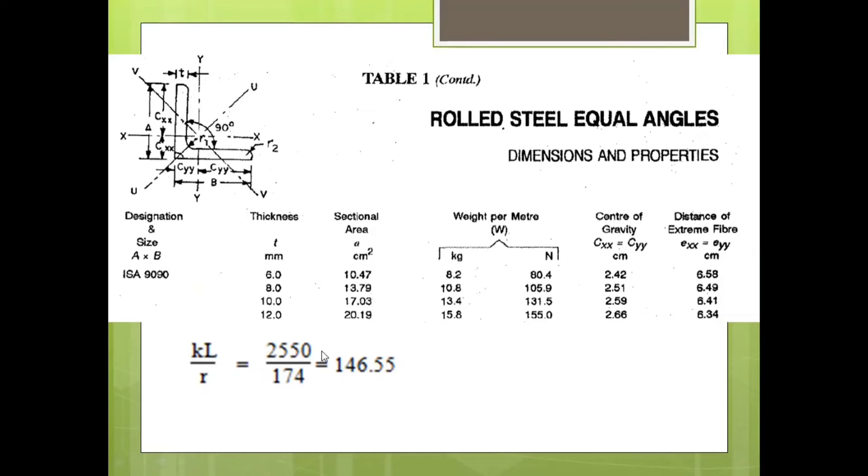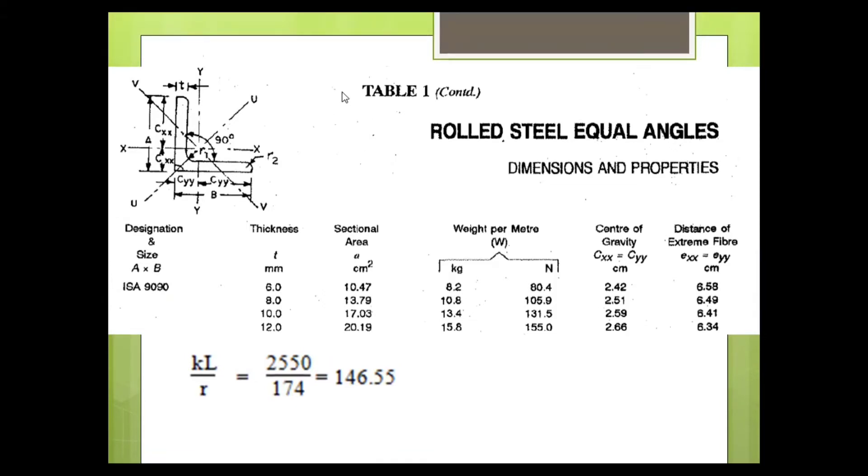This value is also got from steel table. So slenderness ratio for this angle section is 146.55. Now, for a particular slenderness ratio and yield stress value of the section, we have design compressive stress values, which is FCD. FCD value can be calculated now using the next step.